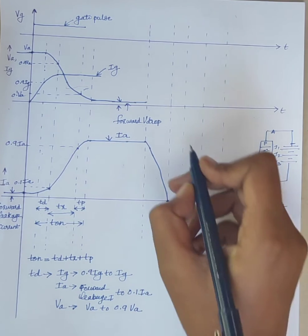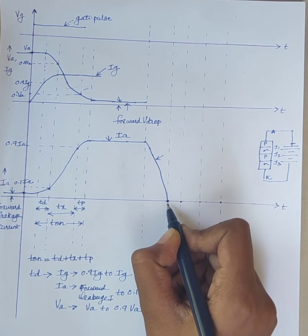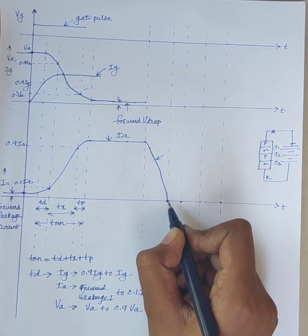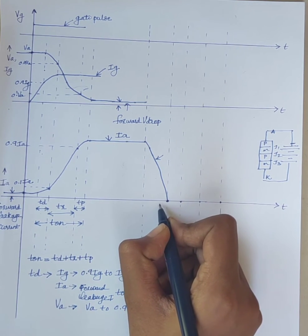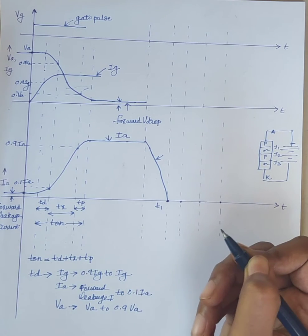That is, first condition is satisfied. Means anode current should be less than the holding current. Here, at time T1, anode current is zero.